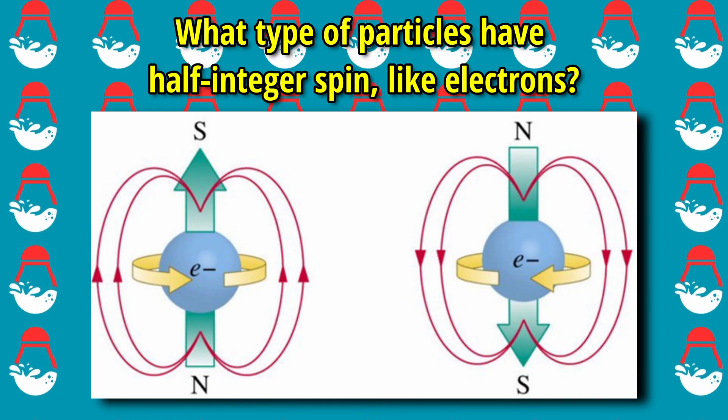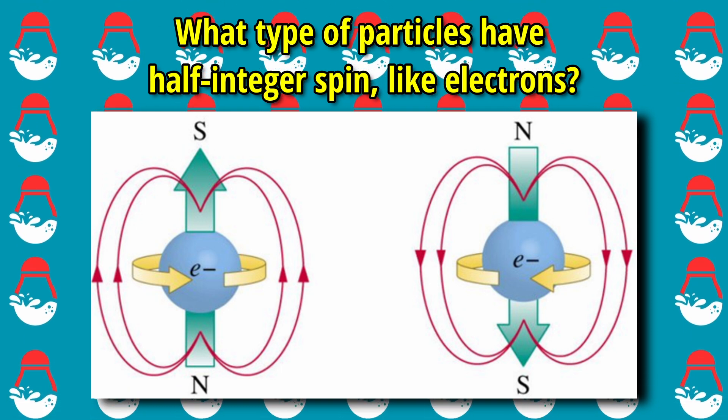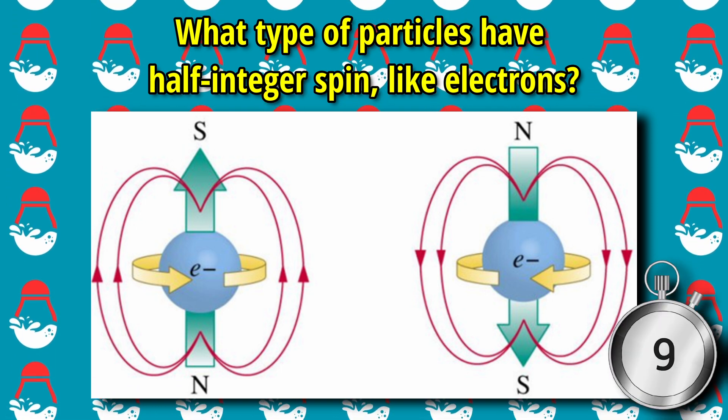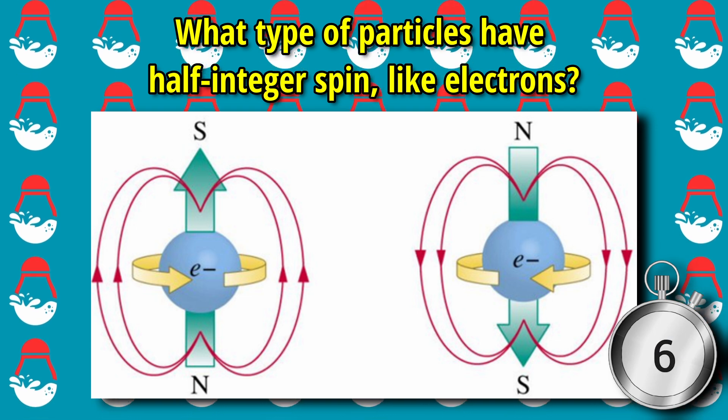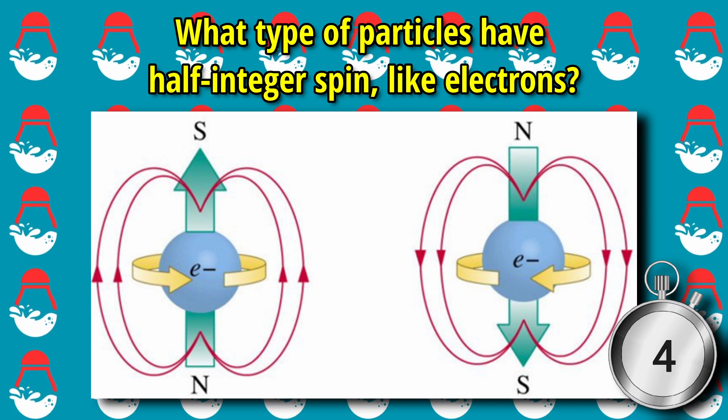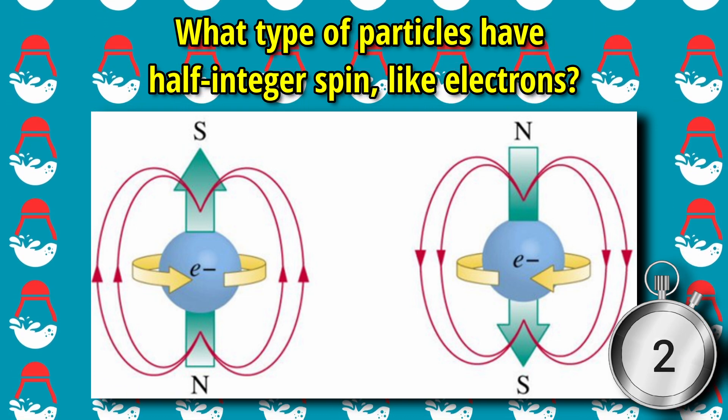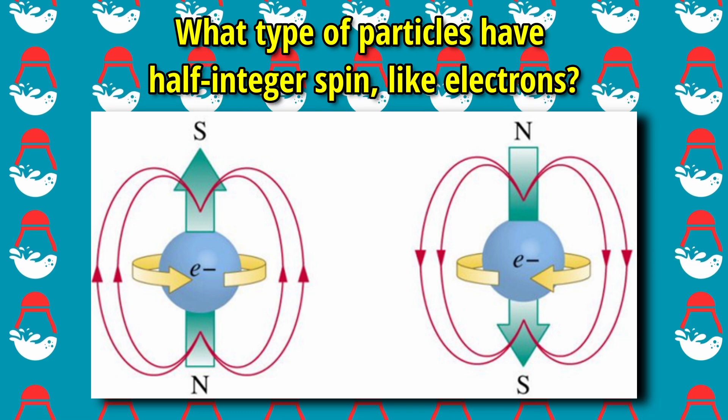Next question. What type of particles have half-integer spin, like electrons? The answer is Fermions.